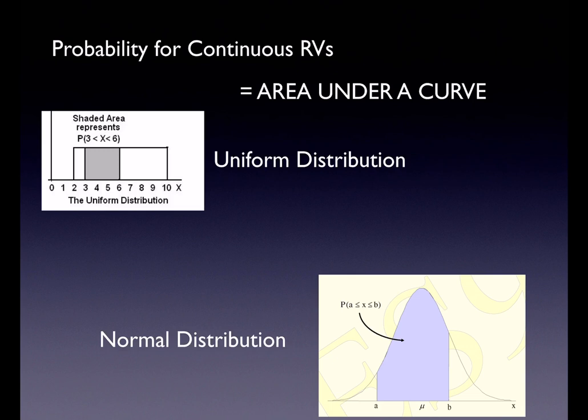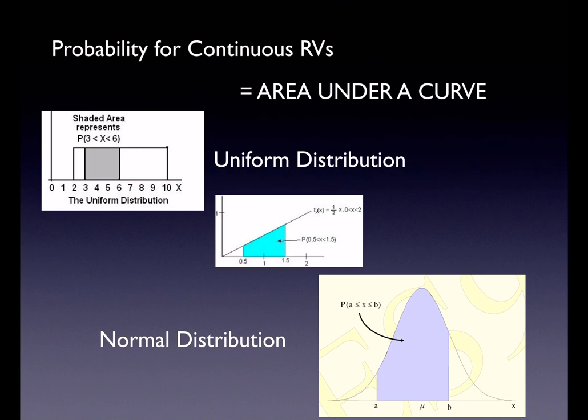We've got technology to do it now, so let's use it. While I only showed you two continuous distributions in this class, there are plenty out there — the Poisson, the exponential, even a triangle distribution. You would still find probability by using an area formula, either from geometry or with technology.